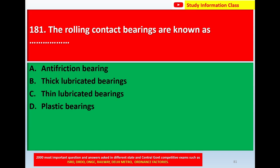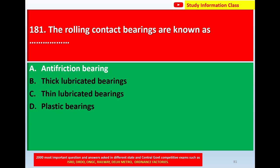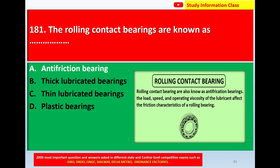Question number 181: The rolling contact bearings are known as — option A: anti-friction bearing, option B: thick lubricated bearing, option C: thin lubricated bearings, option D: plastic bearings. The correct answer for question 181 is option A, anti-friction bearing. Rolling contact bearings are also known as anti-friction bearings.